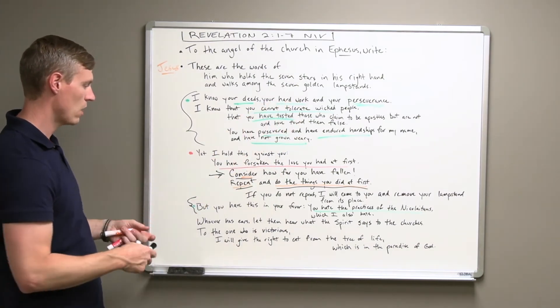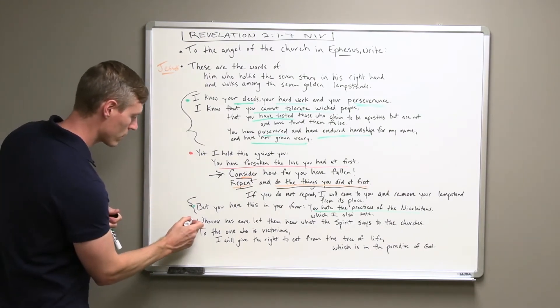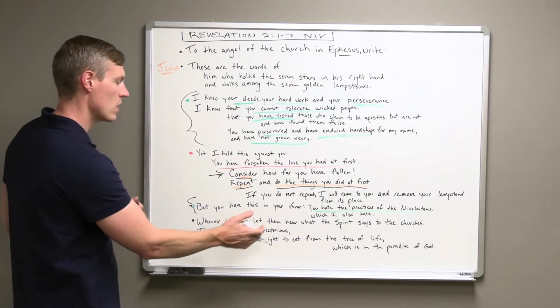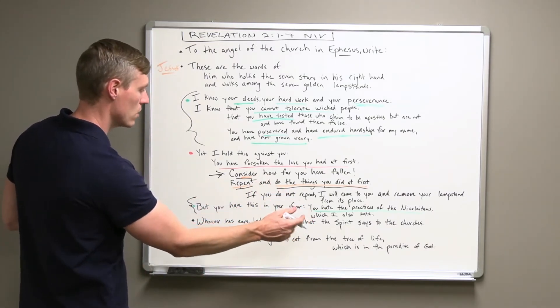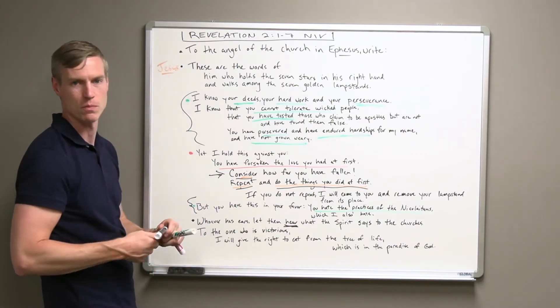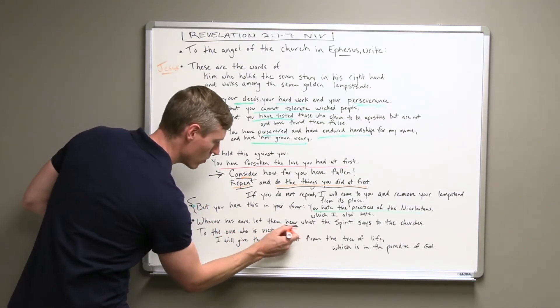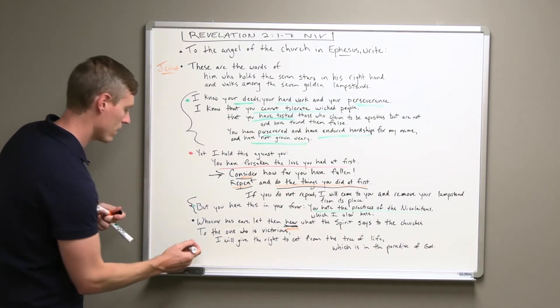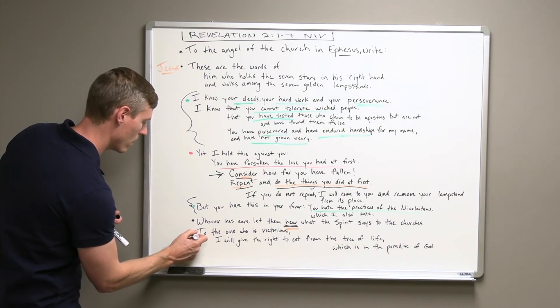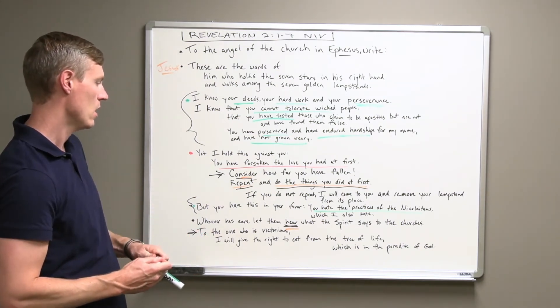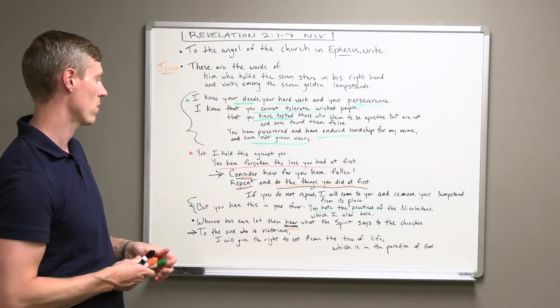And then it closes out with two more things. One, kind of a solemn statement that we need to pay attention. Whoever has ears, hear what the Spirit says to the churches. That's for every one of us who's reading, listening to what Jesus says, listening to what the Spirit says to the churches. And then finally, it ends with this promise. To the one who is victorious, I will give the right to eat from the tree of life, which is in the paradise of God.